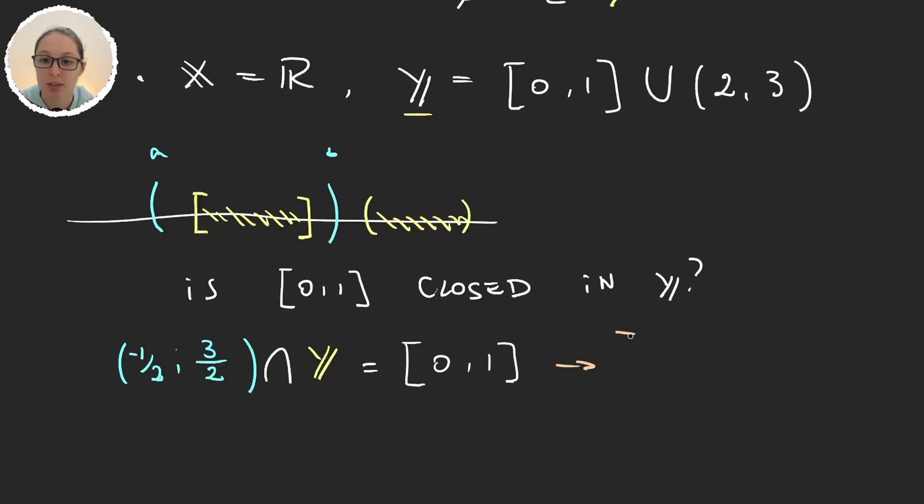This intersection gives us [0,1]. And that's showing that [0,1] is open. It's open. But it's open on Y. This is very important because [0,1] is not open on X. But because we could write it as the intersection of our space Y with an open set of the real numbers then we can say that it's open on Y.